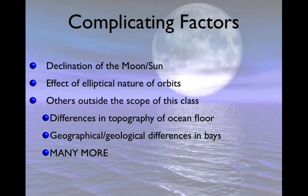The two we're going to talk about most in this class are declination — the declination of the Moon compared to the angle at which the Earth orbits the Sun — as well as the elliptical nature of orbits, since sometimes we're closer or farther away from the Sun or the Moon. There are actually over 400 complicating factors that have been identified, including differences in the ocean floor, shallower or deeper areas, wider coastal margins, refraction (since tides are waves), and even the effect of rivers and bays. Even the best tide predictors like NOAA only take into account about 60 of these to accurately predict tides.